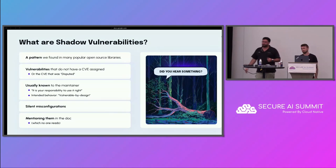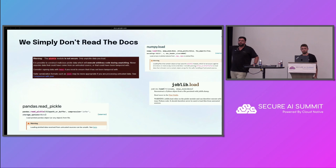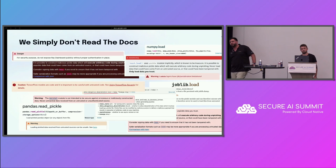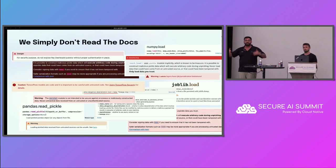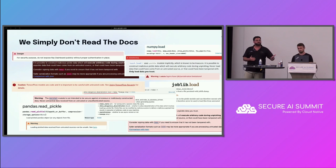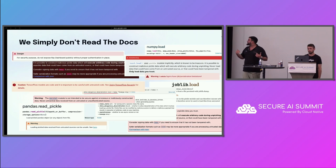For each shadow vulnerability we found, there is a section in the docs — very hidden — that says 'warning' or 'you should not do that,' just throwing responsibility on the developers themselves. We cannot expect a developer to be a security expert in Java object handling, or a data engineer to be an expert in how a language is being attacked. This is the reason you see shadow vulnerabilities starting from this simple throwing of responsibility in the docs that no one reads. As attackers, this is how we started looking for these examples.